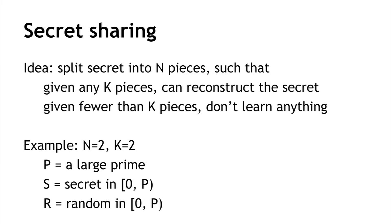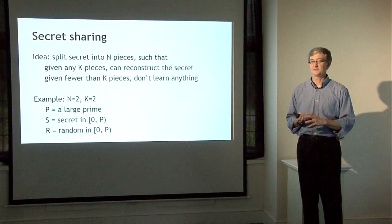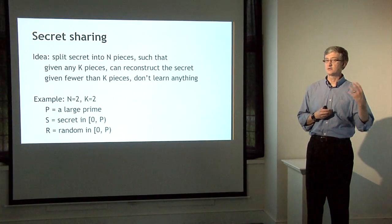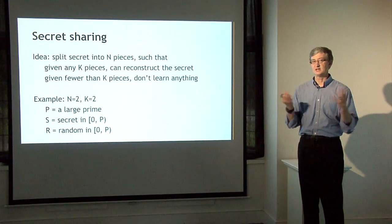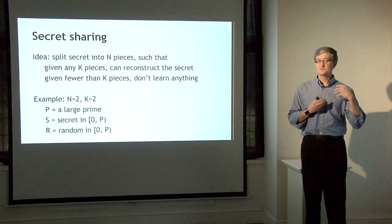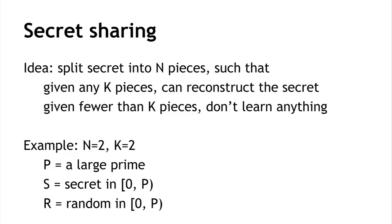We're going to introduce a cryptographic trick called secret sharing. The idea is to take some secret — in our case a secret key — and divide it up into n pieces, in such a way that if we're given any k of those pieces, we'll be able to reconstruct the original secret, but if we're given fewer than k pieces, we won't be able to learn anything about it. For example, n equals 2 and k equals 2: we're dividing the secret into two pieces and you need both to put them together. We generate a large prime number p, and the secret S must be between 0 and p minus 1 inclusive. We then generate a random value r, also within that range.